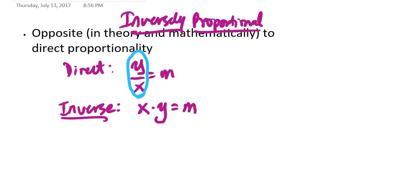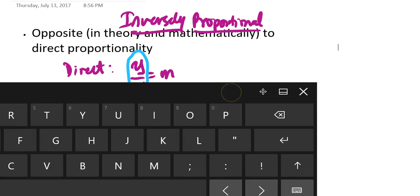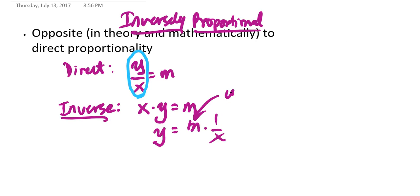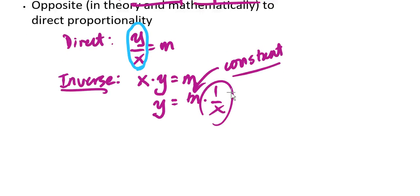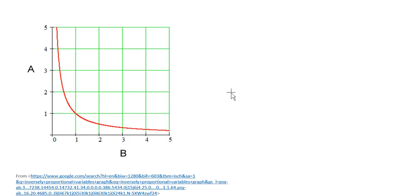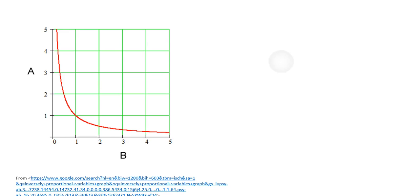Now, if we actually go and rearrange this equation so that y is isolated, I get y is equal to m times one over x, where m once again is our constant. And this graph of one over x is not a straight line. It's actually a relationship that we, in math, call a hyperbola.